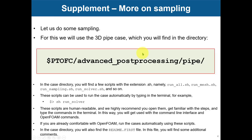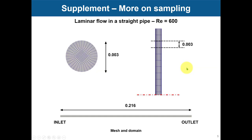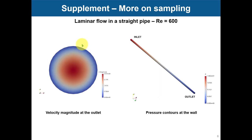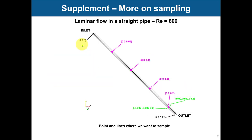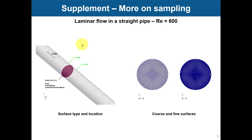So you have this case — it's a relatively simple case of a pipe. Basically this is what we have, and in this pipe we're going to do a lot of sampling with more advanced options. But I want to show you that besides the standard sampling we have done so far, you can also add surfaces — you can create a surface and do sampling on that surface.